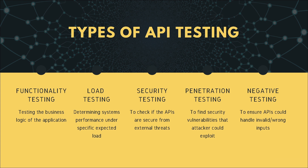Next is security testing. With security testing you're checking if your APIs are secure — for example, ensuring someone cannot access application data without going through the proper authentication process and having the appropriate token. Another example: you don't want one user to be able to access another user's data. Penetration testing goes one level deeper, making sure hackers or attackers cannot break your application or access your company's sensitive data.